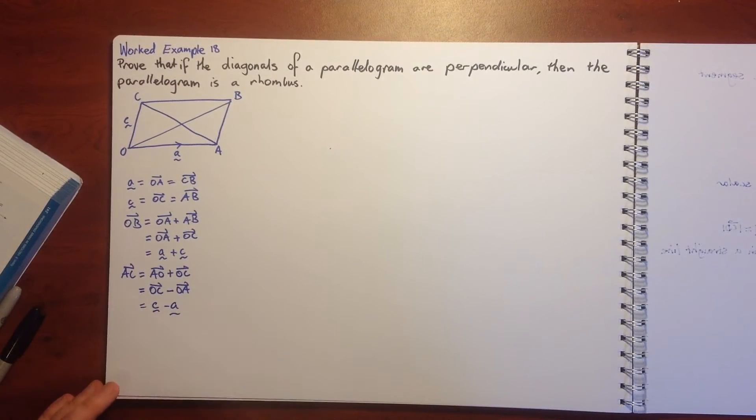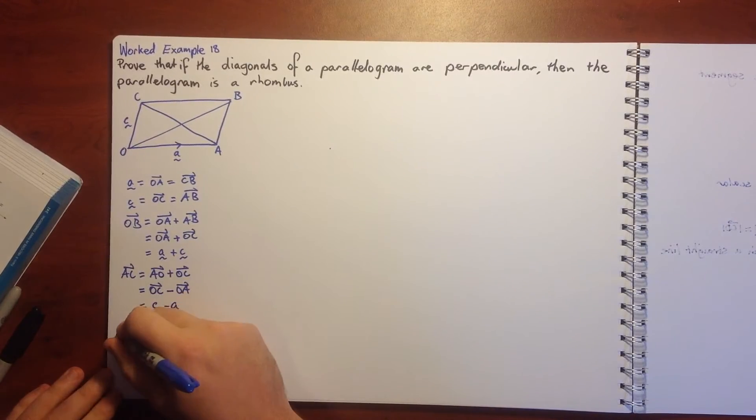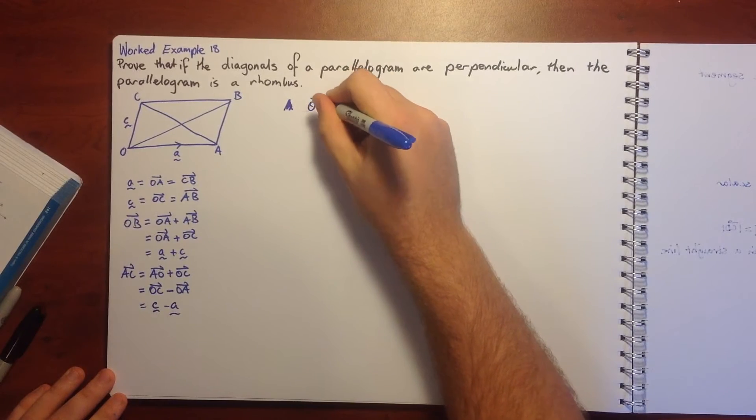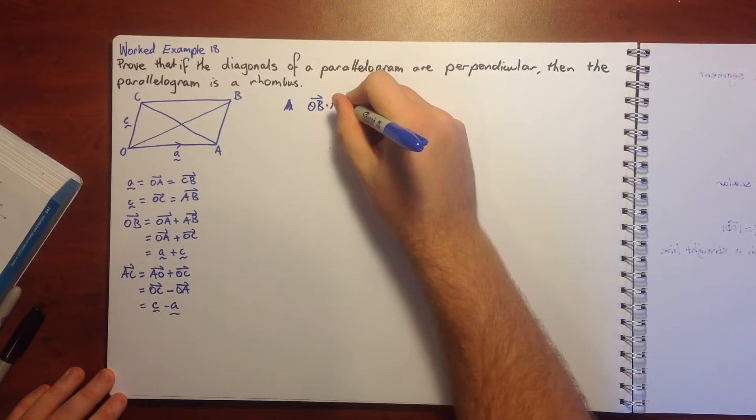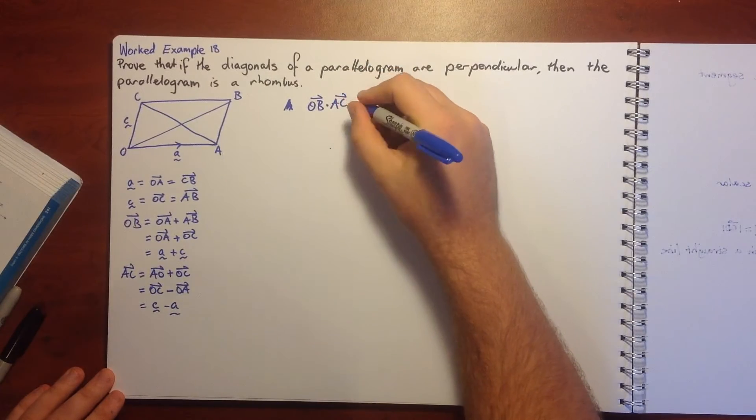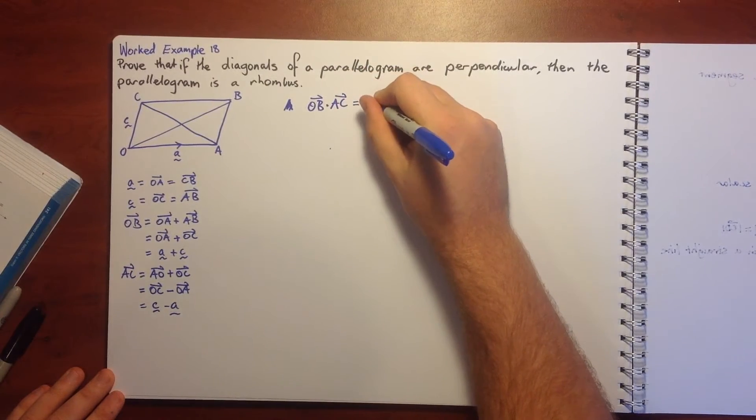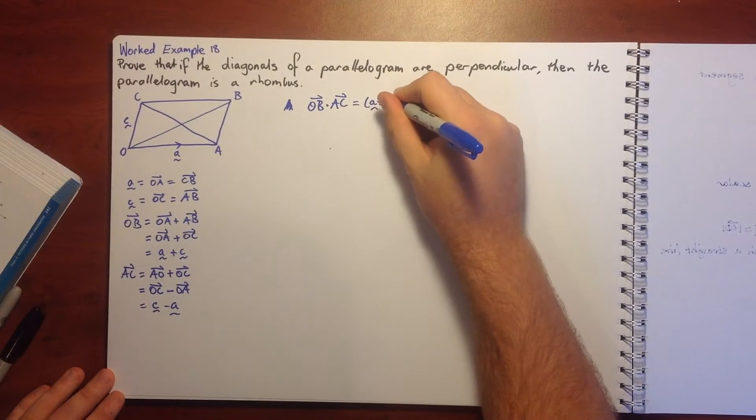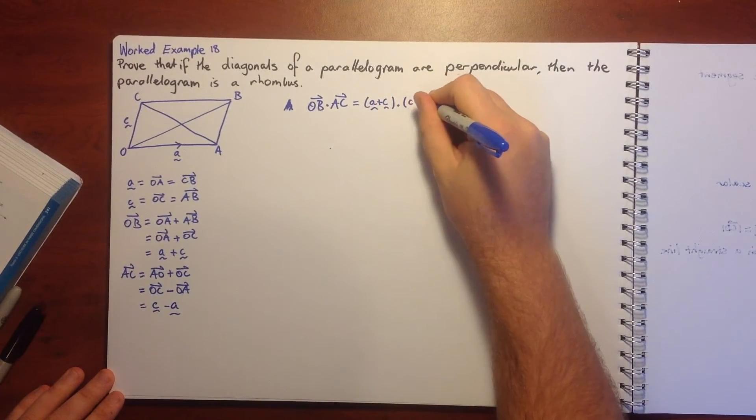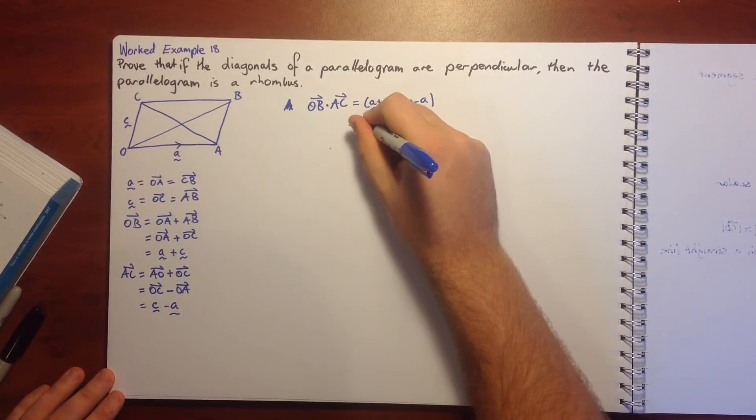The dot product of the diagonals is zero, so we know that OB dot AC, which is equal to our A plus C dot C minus A, we know that's going to equal zero.